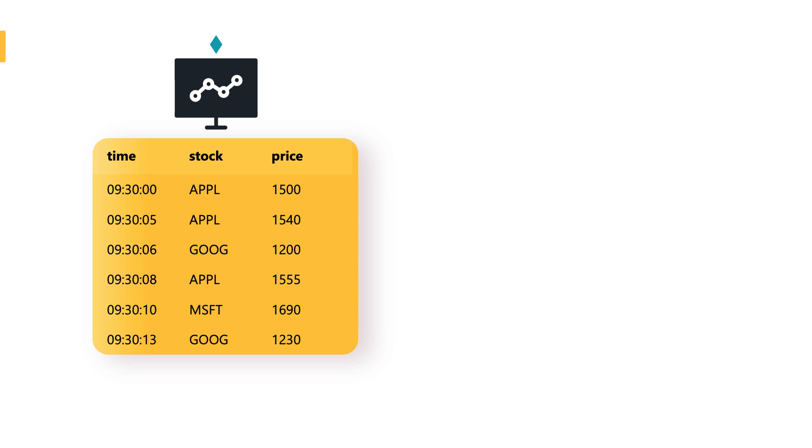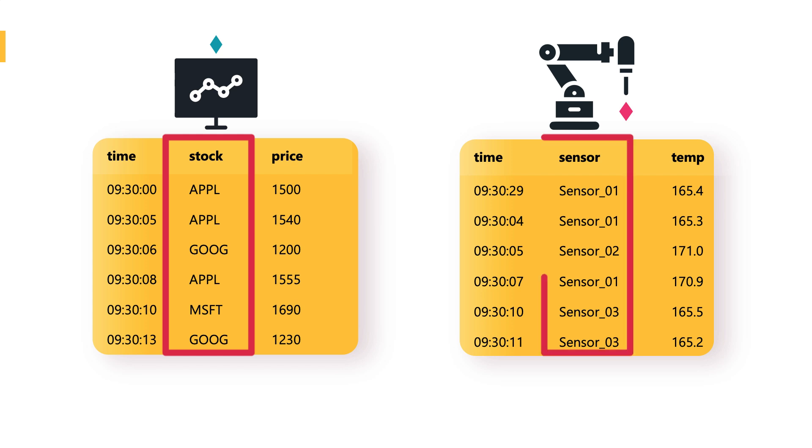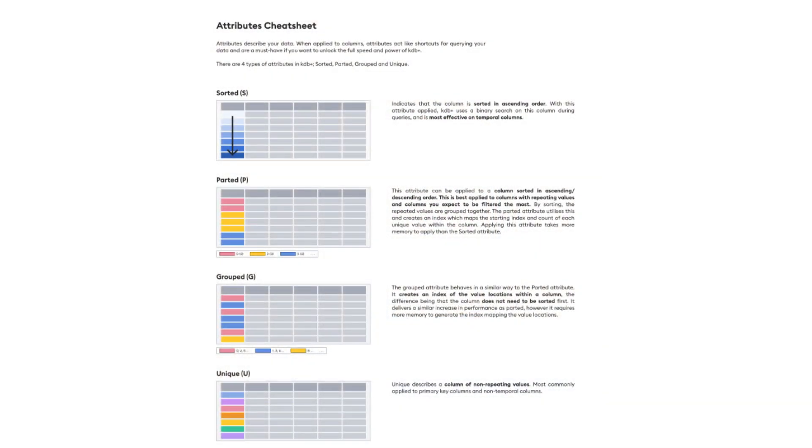You can have different attributes set on the different tiers of your database, tuned to optimize performance at each tier. You need to think about your own use case, user query patterns, and how performant you want your data to be. Commonly with large time series data sets, you'll have a key identifier column — in finance this could be a stock symbol, or in manufacturing an ID column with a sensor name or number denoting which device the readings came from. If you have an ID column like this, choose it to apply a parted attribute to in the HDB and the IDB, which will significantly enhance performance.